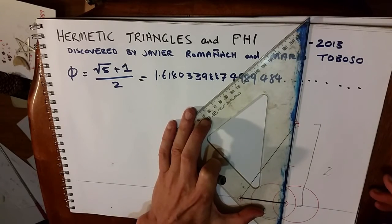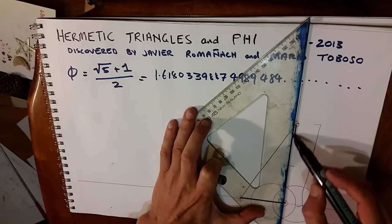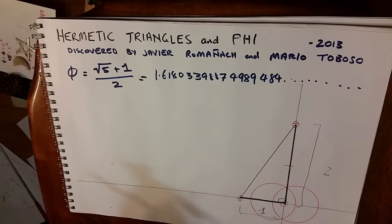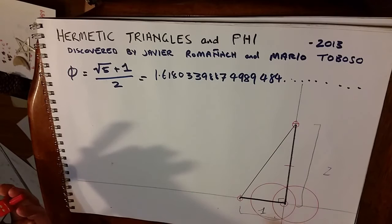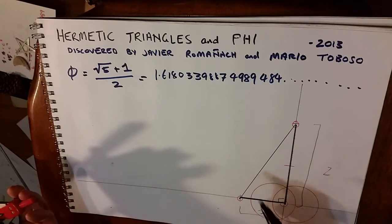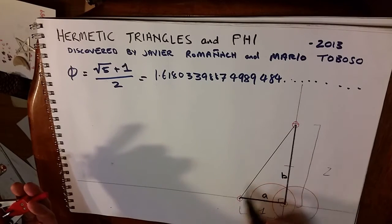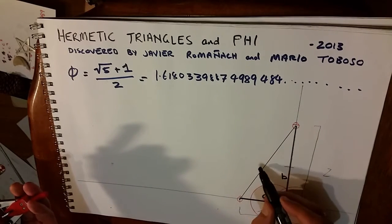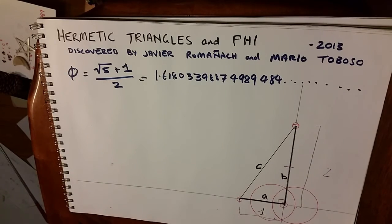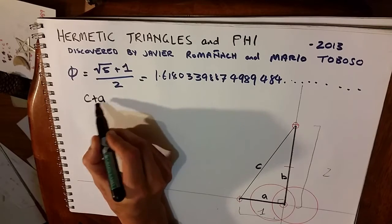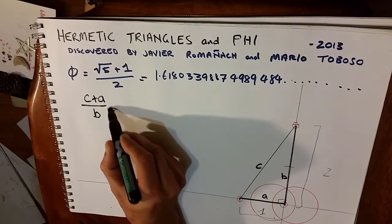And now using Pythagorean theorem, let's create the phi ratio. Now we have one, two, three lines. So let's call this A, this is B, and the long diagonal, the hypotenuse, is C. So what we're going to prove is that C plus A over B equals phi.